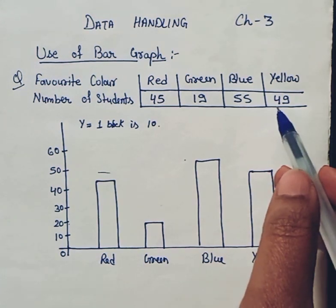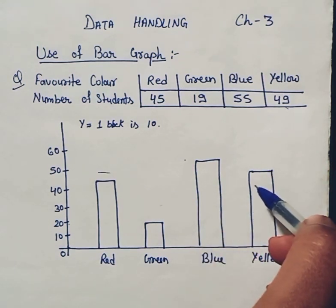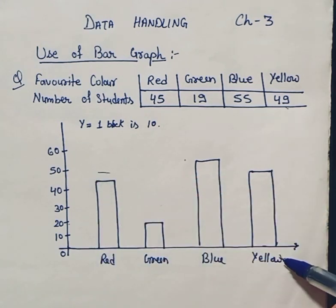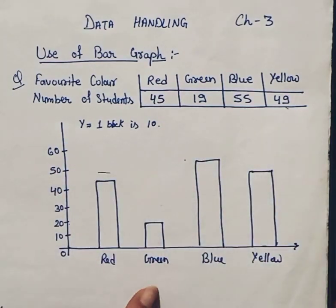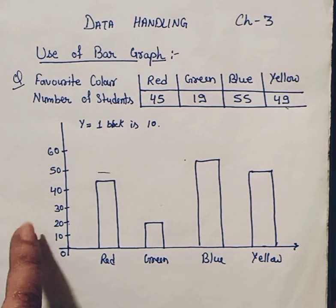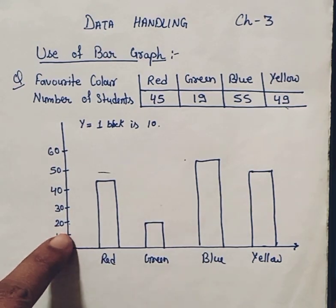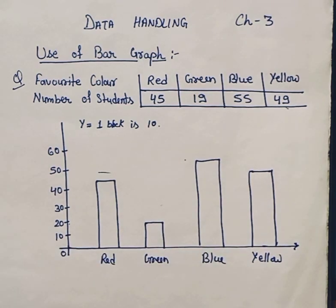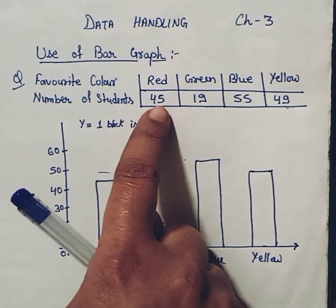The last one is yellow color, which is 49 — nearly one less than 50 — so in the bar graph we plot it just below 50. That is the method to represent data by a bar graph. For this, you should use graph paper where you can find the scale by single lines, which makes it much easier to represent all the bars accurately on a graph paper or graph book.